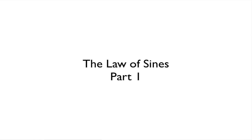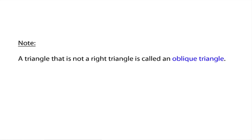This video is on the derivation of the law of sines. Before we get there, we want to make a note that a triangle that is not a right triangle is called an oblique triangle. Up to this point, we've been playing mainly with right triangles, so now we're going to talk about all the other triangles — they're all called oblique triangles.